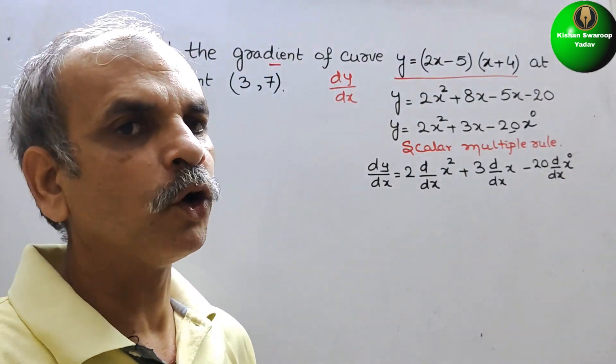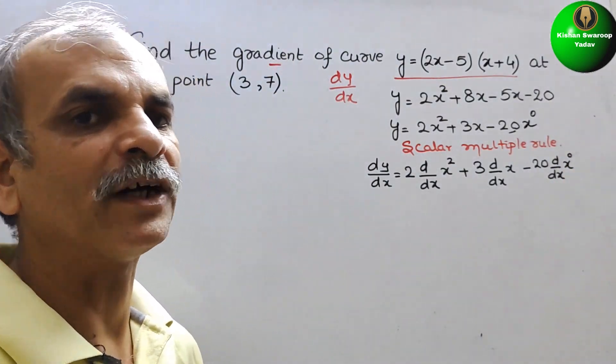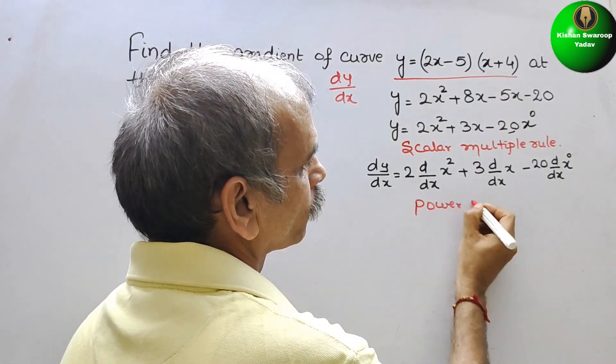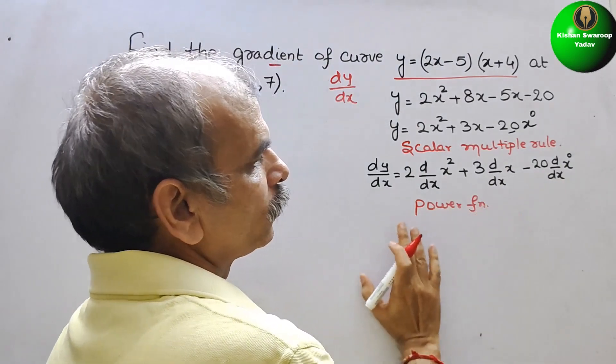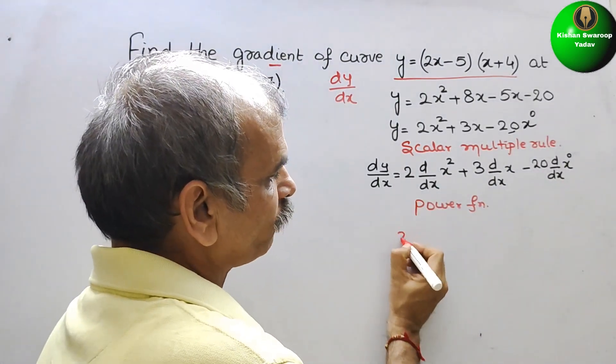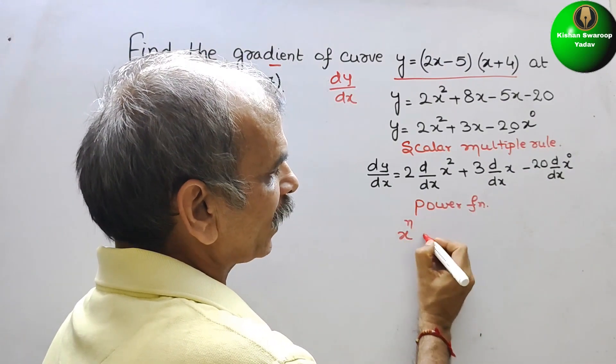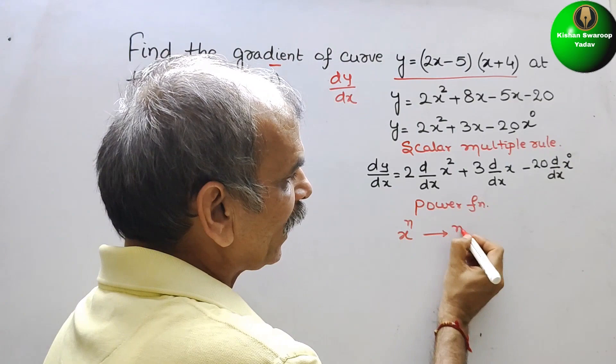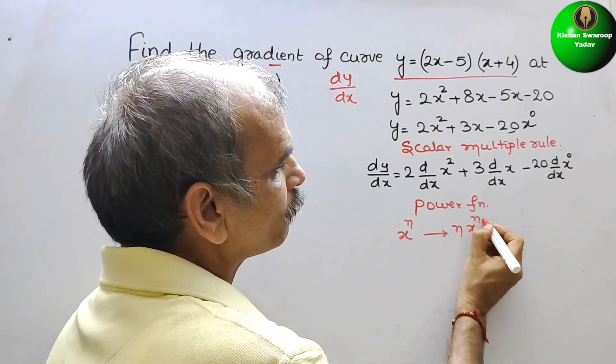Next we have to go for power function. It states that whenever your term is in the form of x to the power of n, if you differentiate it, we will get n x to the power of n minus 1.